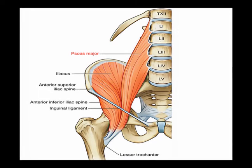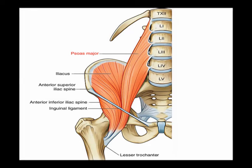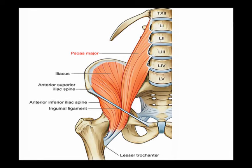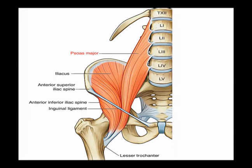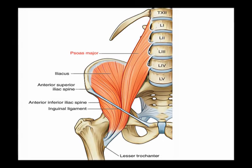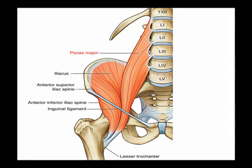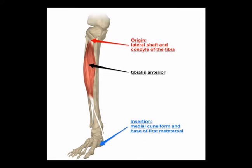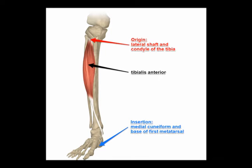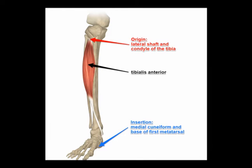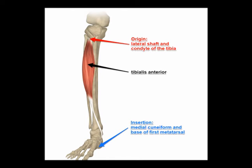Spinal nerve roots L2 and L3 innervate the iliopsoas muscle, which performs concentric hip flexion. Spinal nerve roots L3 and L4 innervate the quadriceps muscle; when contracted concentrically, it performs knee extension. Spinal nerve root L4 innervates the tibialis anterior muscle, which when contracted concentrically performs ankle dorsiflexion. Spinal nerve root L5 innervates the extensor hallucis longus muscle, which when contracted concentrically performs great toe extension.